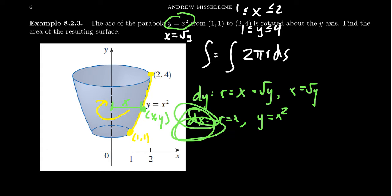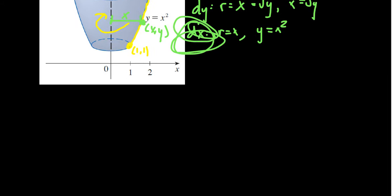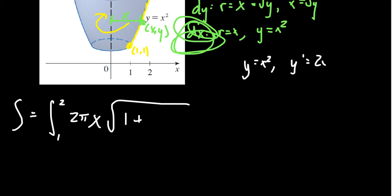Let's integrate this thing with respect to x. That means ds is going to look like the square root of 1 plus y prime squared dx. Let's set up our integral using that approach. We're going to integrate s. We're going to integrate with respect to x, so we want to go from 1 to 2. We get 2π times the radius. The radius here we found was x. Then we get the square root of 1 plus—remember, y was x squared, which means y prime is 2x.